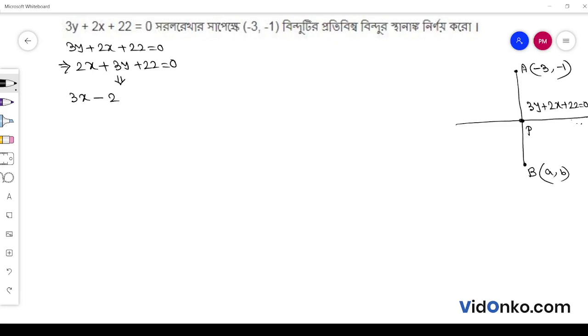3x minus 2y plus k is equal to 0. This is equal to 0. This is equal to minus 3, minus 1, the point minus 3, minus 1.